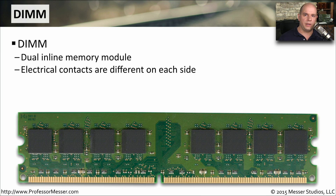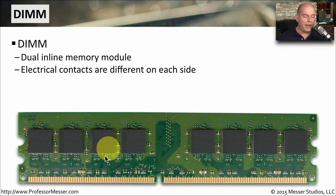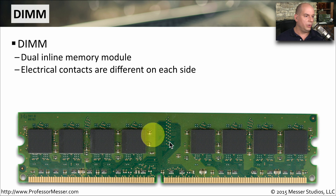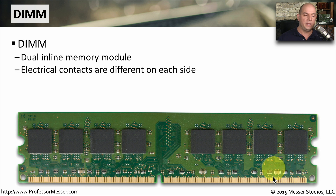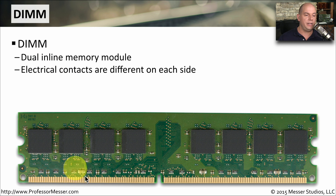One common memory type, especially on desktop computers, is a DIMM — it stands for dual inline memory module. This is a single module that would be plugged into the system. All of the memory is inline; these are not separate chips. Everything is in one single long chip set. It is a dual inline memory module because the electrical contacts on this side are different than those on the other side. On a DIMM, dual inline means each side is effectively a different set of contacts to the memory.